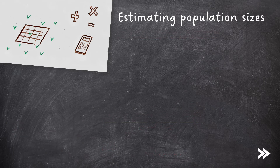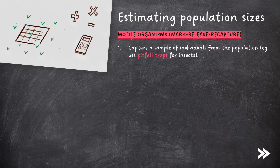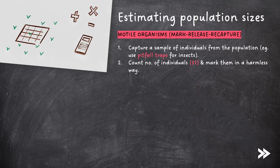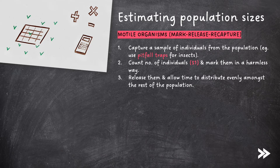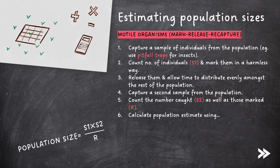We also need to know how to estimate population sizes of motile organisms. The method used is the mark-release-recapture method. First, we capture a sample of individuals — for insects, this could be done using pitfall traps. We count the individuals and mark them in a harmless way, then release them and allow time for them to mix evenly with the rest of the population. We then capture a second sample, count the total individuals and those that are marked. The population estimate is calculated as: population size = S1 × S2 ÷ R, where S1 is the number caught in the first sample, S2 is the number caught in the second sample, and R is the number marked in the second sample.